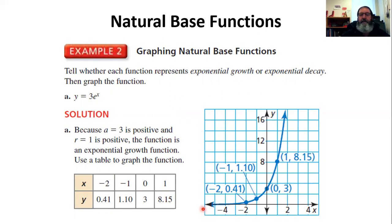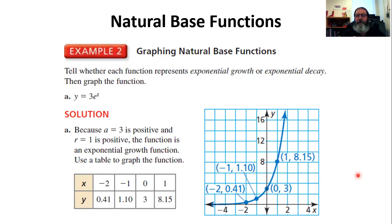One reminder: some students have lost points on homework for inaccurate graphs. Remember that graphs need an X and Y axis with labels, a scale with tick marks or grid lines, numbers indicating what those marks represent on both axes, and labeled key points. Graphs have to tell a story to the person who looks at them — the viewer must be able to understand the values being shown.